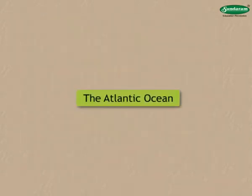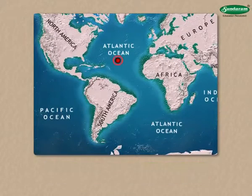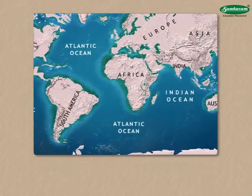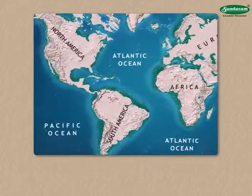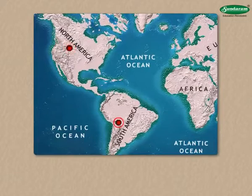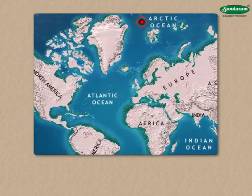The Atlantic Ocean extends in the north-south direction. The continents of Europe and Africa are to its east, whereas the continents of North and South America are to its west. It stretches up to the continent of Antarctica in the south. The Arctic Ocean lies to its north.